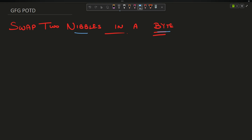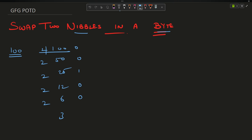The question says that you have a number — suppose your number is 100. What is the binary representation of 100? 100 divided by 2 gives 50 remainder 0, divided by 2 gives 25 remainder 0, divided by 2 gives 12 remainder 1, divided by 2 gives 6 remainder 0, then 3 represented as 1 1 — so the binary representation is 1 1 0 0 1 0 0, which is 7 bits. We make it 8 bits. It is 8 bits, also known as a byte.